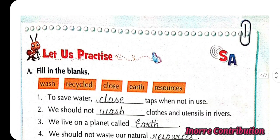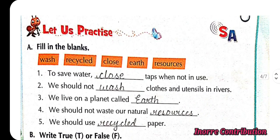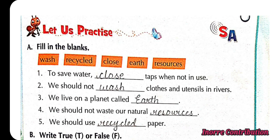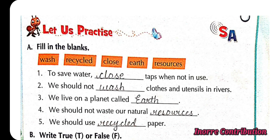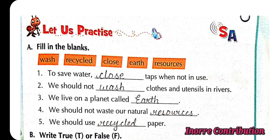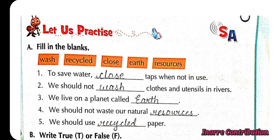Let us practice. Fill in the blanks. First: to save water, close taps when not in use. Second: we should not wash clothes and utensils in rivers. Third: we live on a planet called Earth. Fourth: we should not waste our natural resources. Fifth: we should use recycled paper.